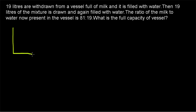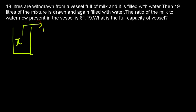We have a vessel and we don't know the capacity of the vessel or how much milk is present — that is what we have to find out. So let the capacity of the vessel be x. The initial quantity of milk in the vessel is also equal to x. From that, 90 liters of milk is taken out and replaced with water.